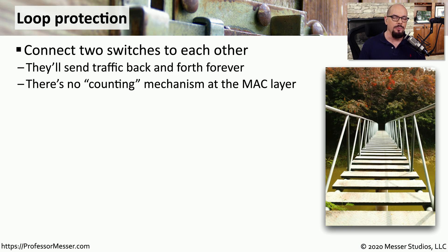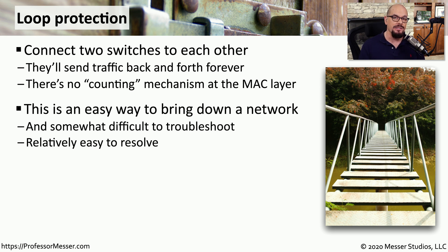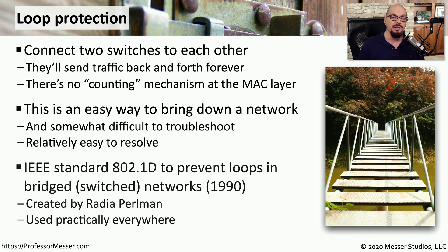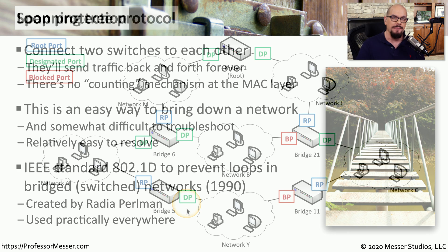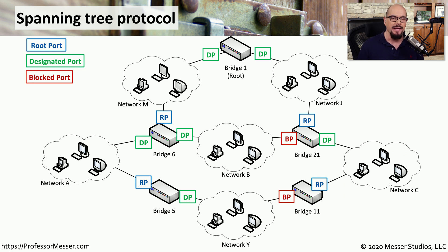One challenge with Layer 2 networks is there's no built-in mechanism to recognize and remove loops. This makes it very easy to accidentally bring down the network by connecting two networks into a loop configuration — for example, plugging the wrong cable into the wrong interface in a wiring closet. Fortunately, there is the IEEE 802.1D standard, created by Radia Perlman, called Spanning Tree Protocol (STP), which is a common way to implement loop control on Layer 2 networks.